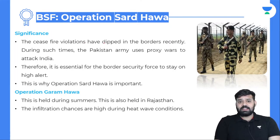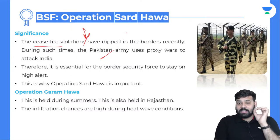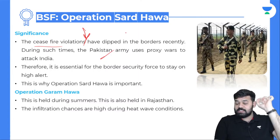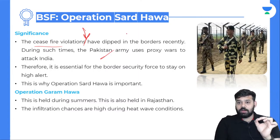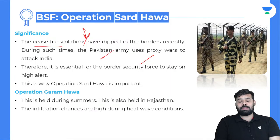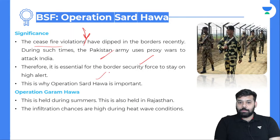The soldiers patrol areas near the police station with advanced weapons, and jawans monitor border areas using camel footprint tracking. The significance: since ceasefire violations have dipped, Pakistan resorts to proxy wars. BSF guards the Indo-Pakistan border from the desert area of Rajasthan. During winter with thick fog, there is a risk of infiltration by Pakistan and militants, and since ceasefire violations have decreased, BSF must increase surveillance. This is why Operation Sardhava is important.